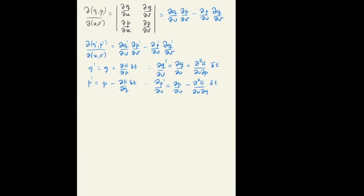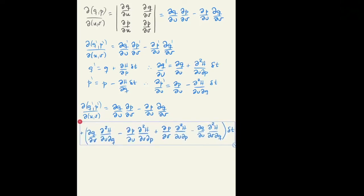If you substitute these expressions for the derivatives of the prime quantities into the Jacobian, then you find the original Jacobian plus a term that depends on time with these four mixed terms.